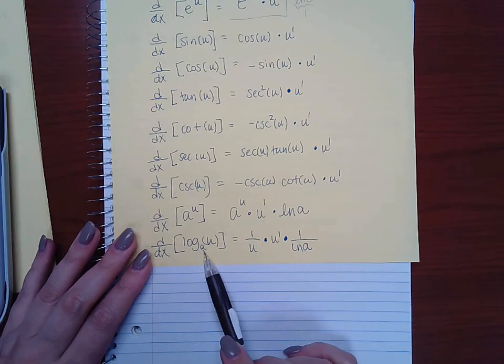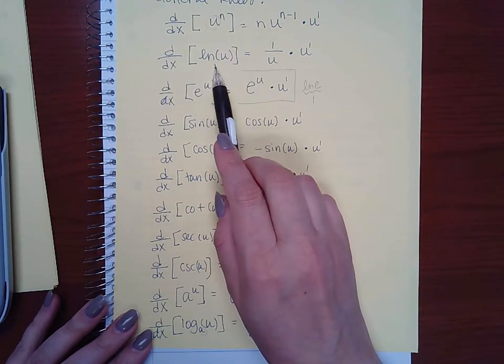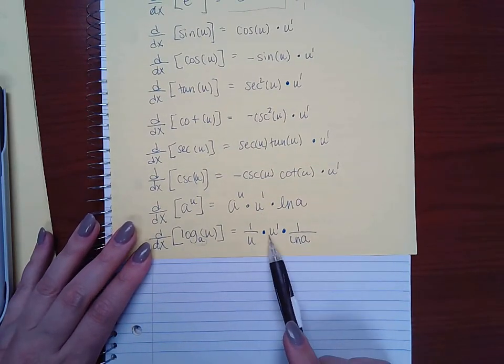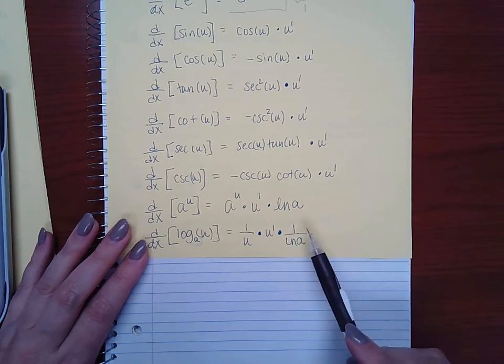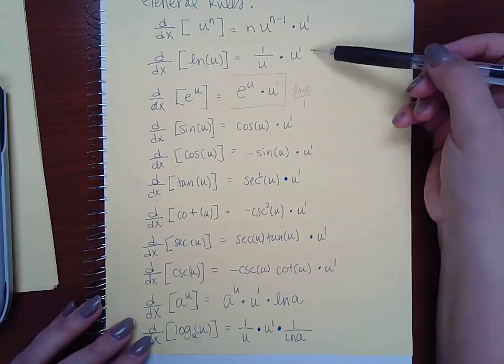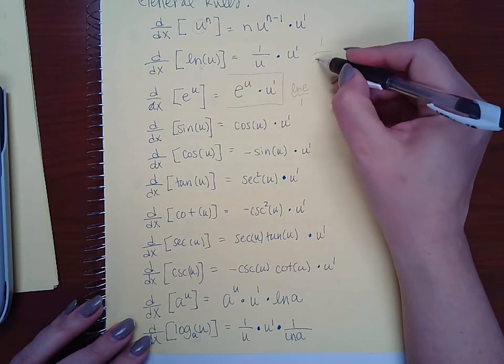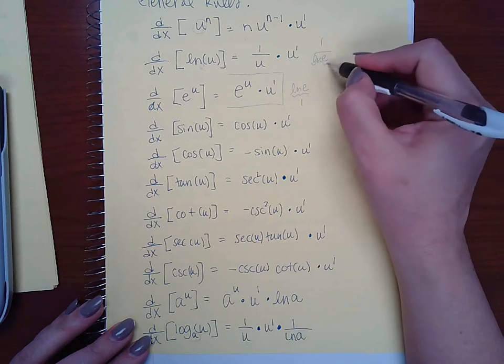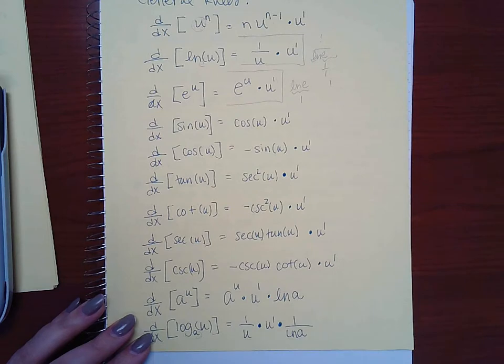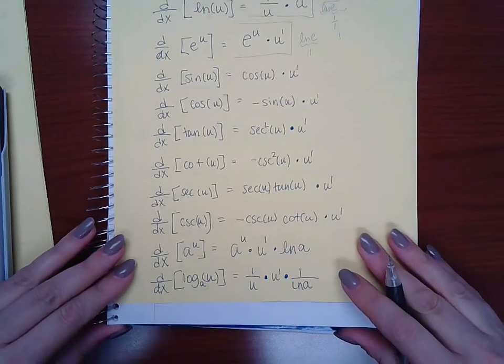The log of any base, not necessarily just the natural base e, but any base, would be 1 over the original argument times the derivative of the argument, but then times 1 over ln of a. And again, up here the base is e, so we don't multiply by 1 over ln of e because that would just be 1 over 1, which is one, which doesn't change this original claim.